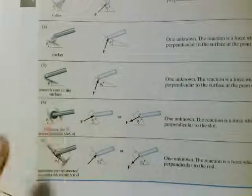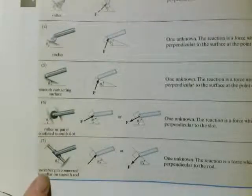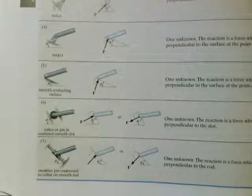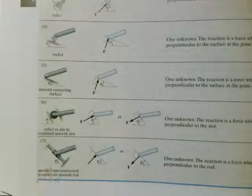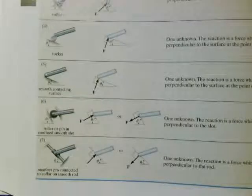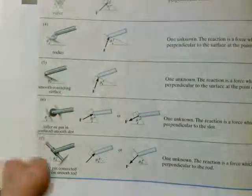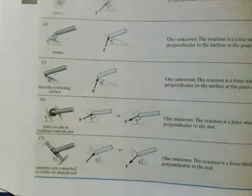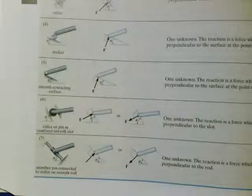That's the same with the rocker, just a smooth contacting surface, and a roller, and a member pin connected to collar on smooth rod. So all of these, they can only keep it from moving where the link touches the surface.